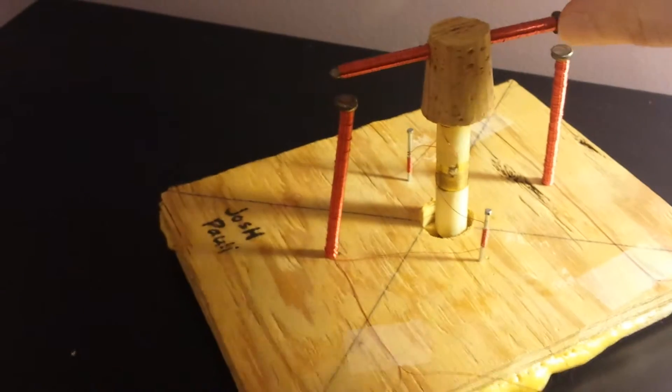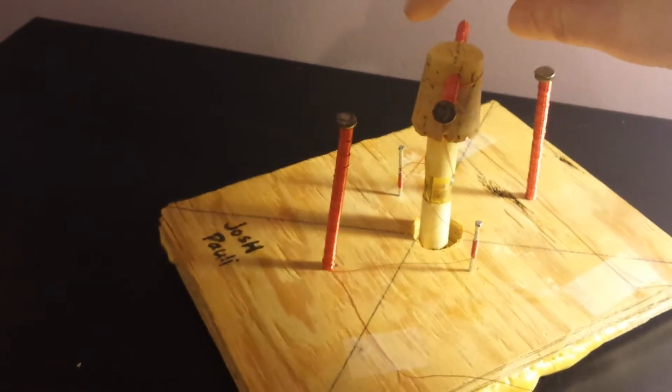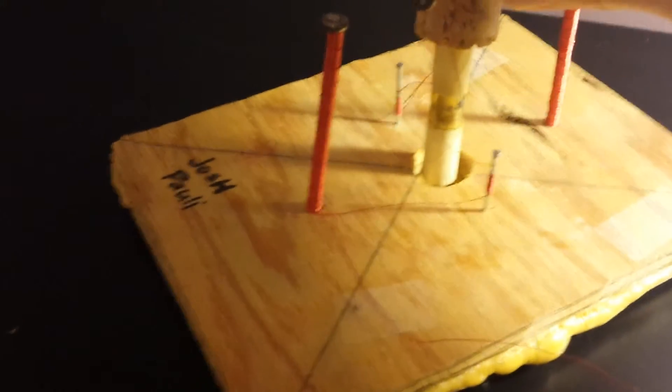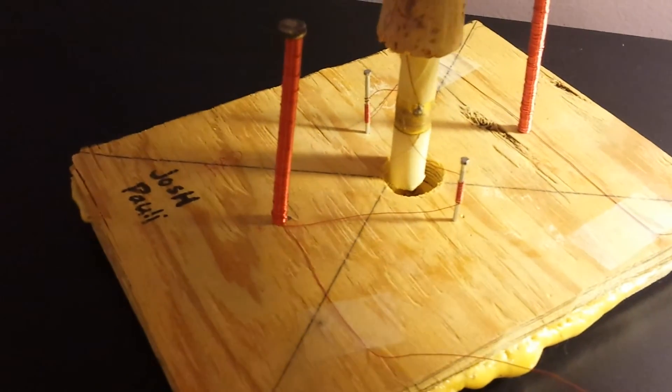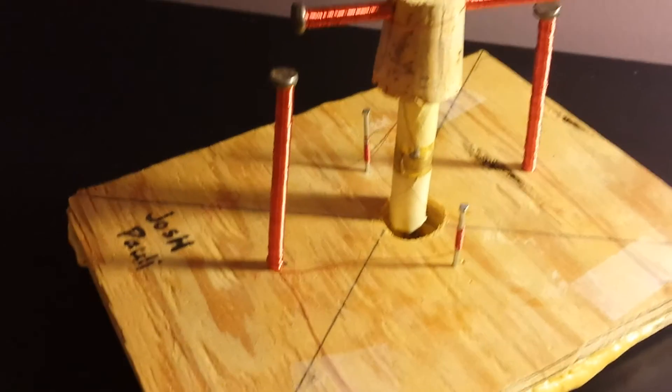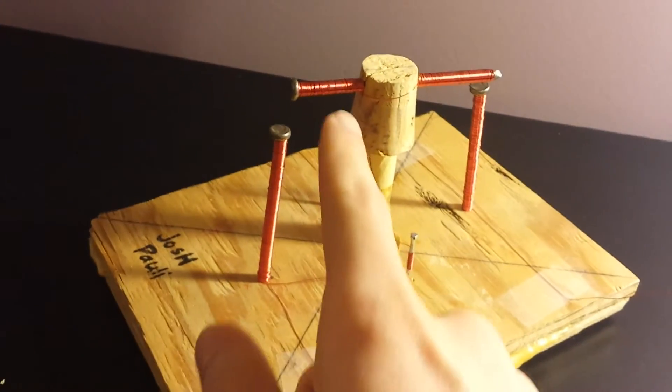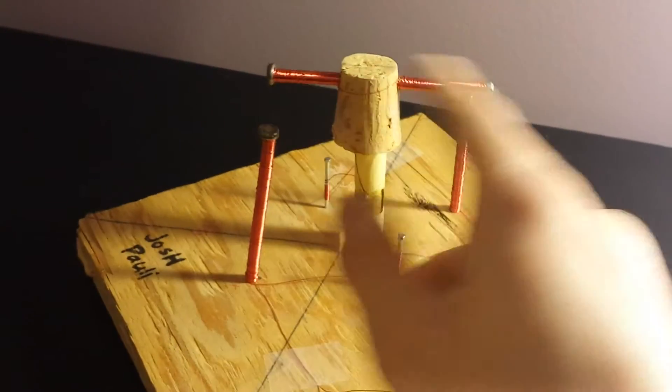With the magnetic field in the nails, the motor will begin to spin and after it spins a bit, it will lose contact and then the brushes will switch metal plate contacts.